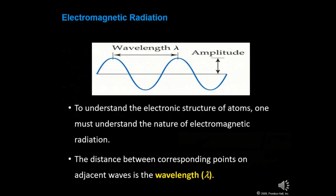Electromagnetic radiation applies to all kinds of radiation, including light. The most important properties are wavelength and frequency. Wavelength, denoted by lambda (λ), is the distance between corresponding points on adjacent waves. To understand the electronic structure of atoms, one must understand the nature of electromagnetic radiation. The units of wavelength are meters, but because wavelengths can be very small, we often use nanometers.